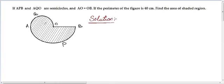Here we need to find the area of the shaded region. In the shaded region we have two semicircles: one is APB, which is the bigger semicircle, and AQO, which is the smaller semicircle. We need to find the area of these two semicircles and find the total area of the figure. Given that the perimeter of the figure is 40 cm. Also given that OA equals OB, which means O is the midpoint of AB.